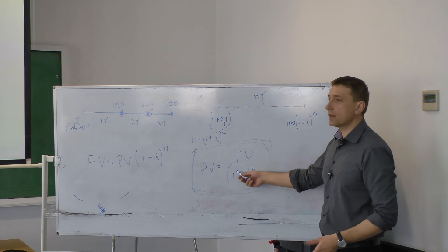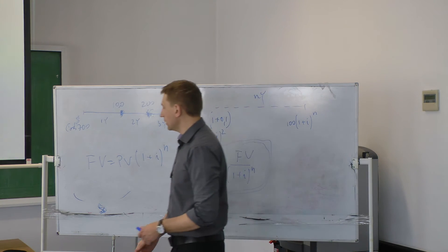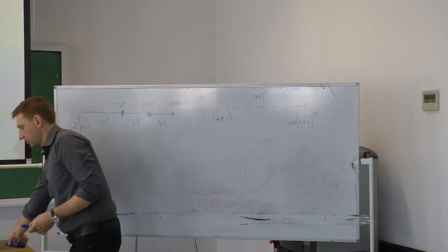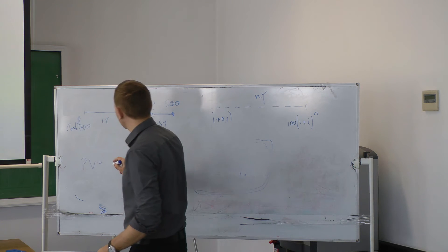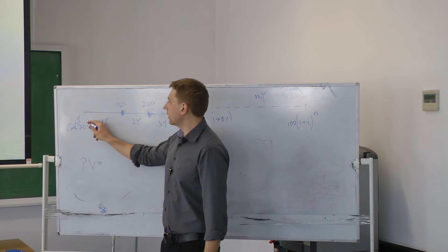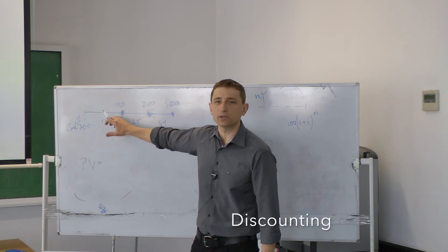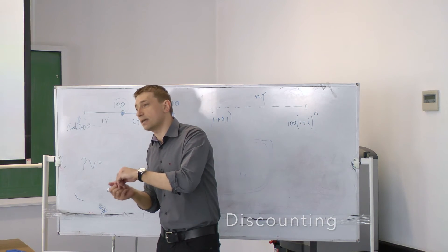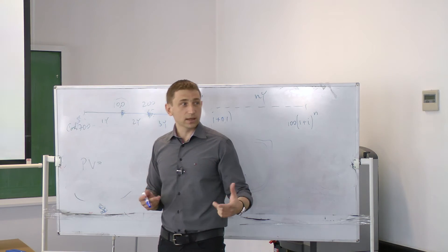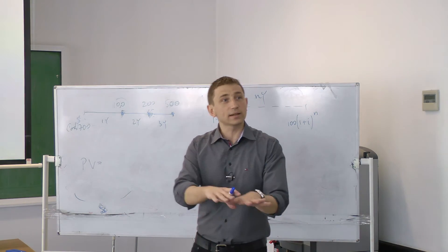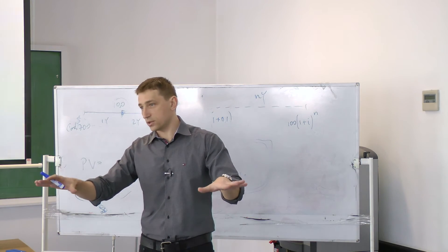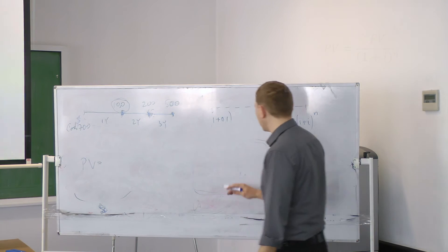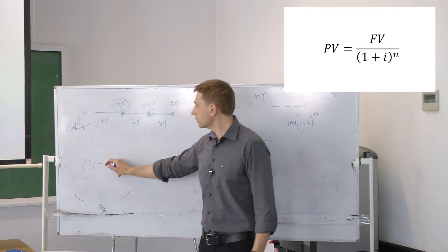I can use the present value formula to calculate the present value of this project and see if it's a good or bad idea. I have to discount — this is the keyword: discounting. I have to discount the $100 in the future because $100 in one year is not the same as $100 today. If you have to choose between $100 on the table and $100 in one year, it's a very easy decision — you take the $100 on the table.